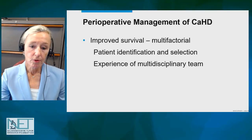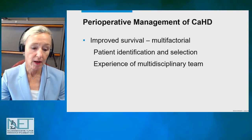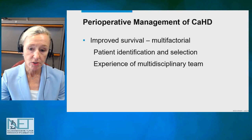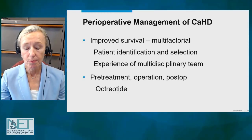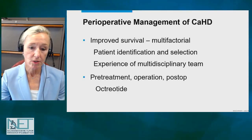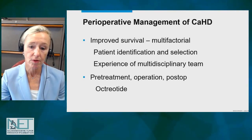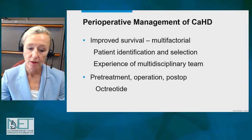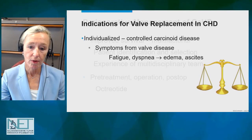Improved survival has been seen in patients with carcinoid heart disease, and the reason is multifactorial. We identify patients earlier. There's a multidisciplinary care team approach. We pre-treat patients with octreotide and then have a team that is familiar with the use of octreotide throughout the procedure and in the perioperative and postoperative setting as well.